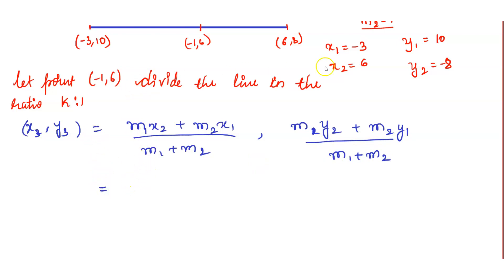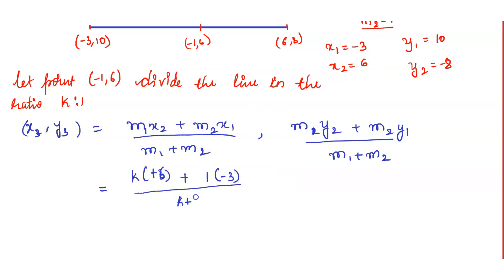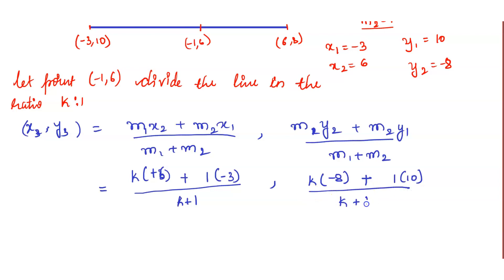Substituting: m1 is k, x2 is 6, m2 is 1, x1 is -3, giving x3 = (6k + 1·(-3)) / (k + 1). Similarly, y3 = (k·(-8) + 1·10) / (k + 1), which is (-8k + 10) / (k + 1).